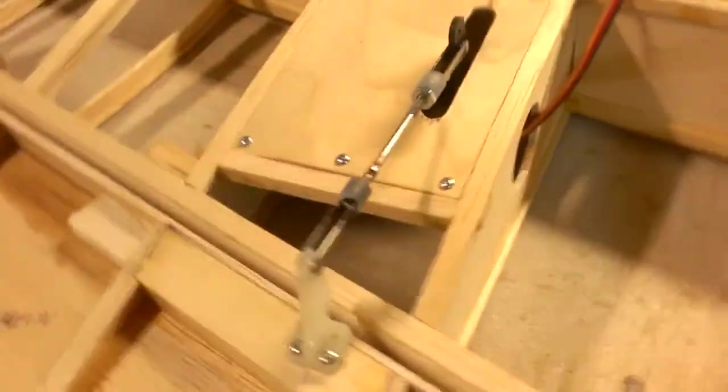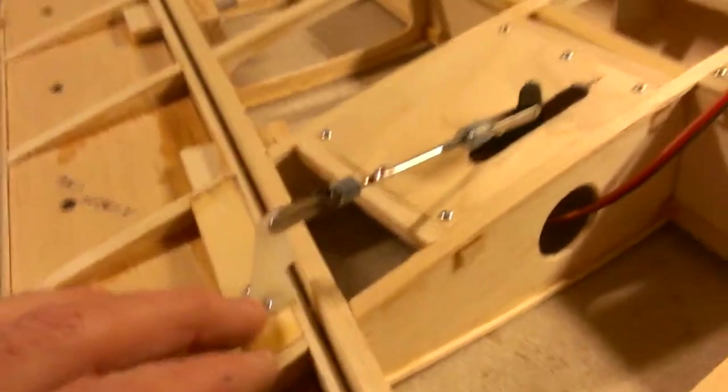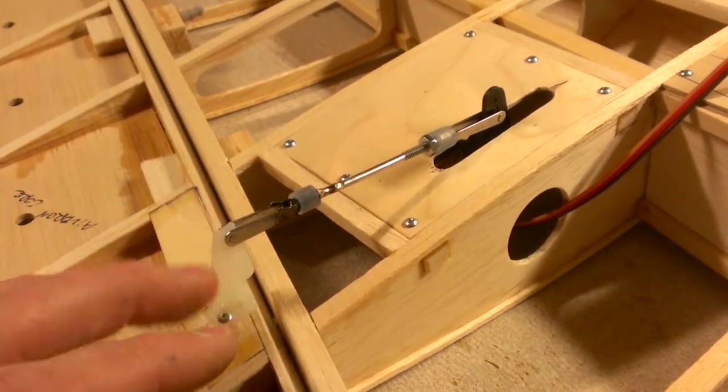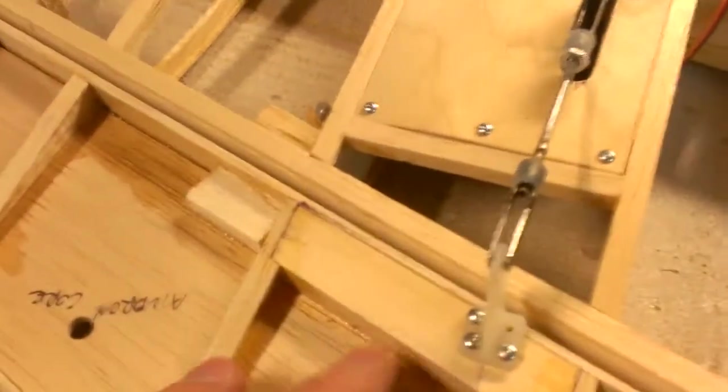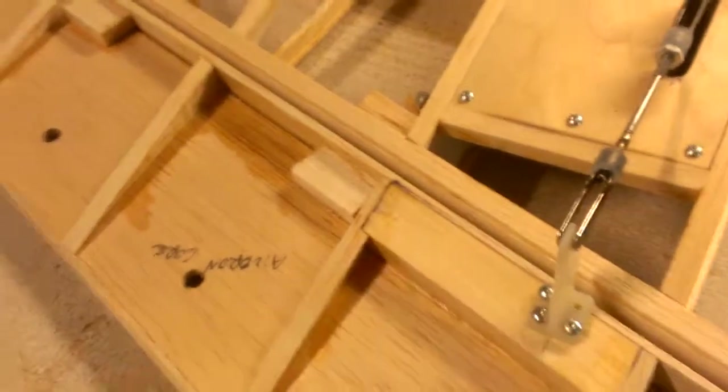So that was my main problem, I just solved that. I just bought these Dubro, I guess they're called extra strength or high strength control horns, and I added one screw, and these are just number two socket head machine screws.